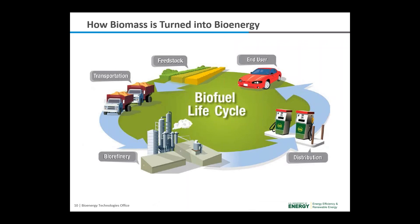There are five steps to turning biomass into bioenergy: feedstock supply and harvesting; transportation of feedstocks to the biorefinery; conversion of feedstock to fuels and products at the biorefinery; distribution of fuels and products at gas stations, stores, and other places that use gasoline and ethanol; and product and fuel consumption by consumers.